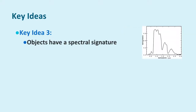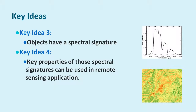Key idea number three: all objects have a spectral signature — simply the light which they reflect. Each one is unique. And as a result, we come to key idea number four: the properties of those spectral signatures can be used in remote sensing applications. This allows us to compare things, and that's critical to band ratios.